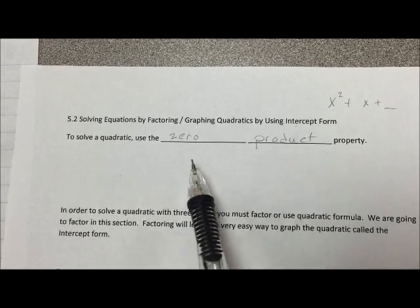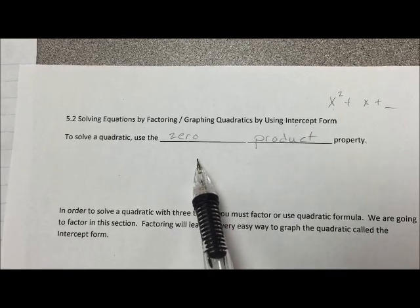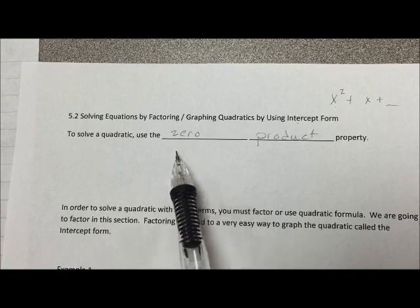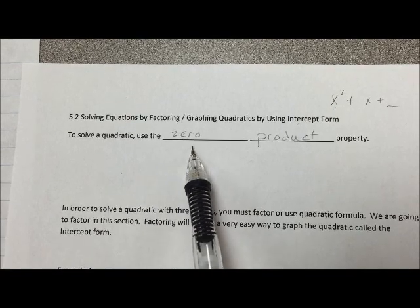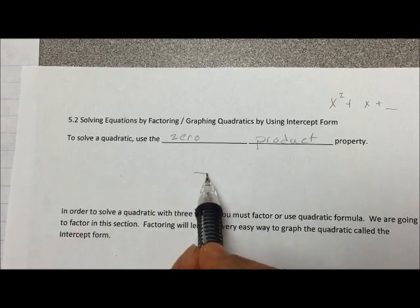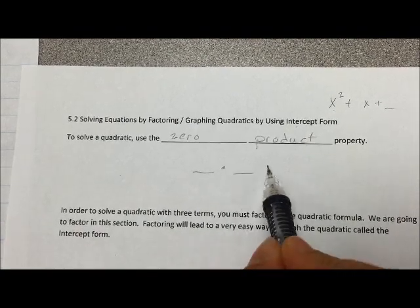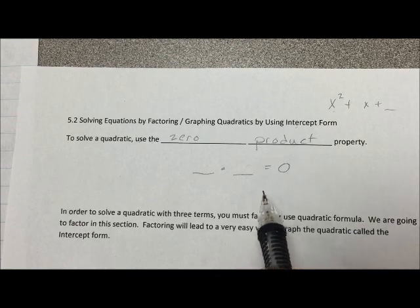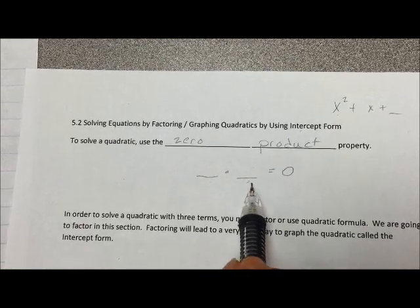But before we do that, we need to go back and talk about how to solve a quadratic. The way that you solve a quadratic is by using the zero product property. The zero product property says that if you take two numbers and multiply them together and the answer is zero, then one of these two numbers has to be zero.